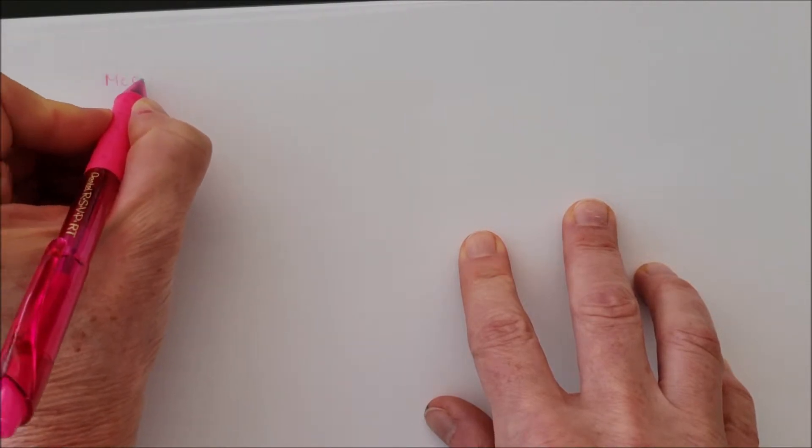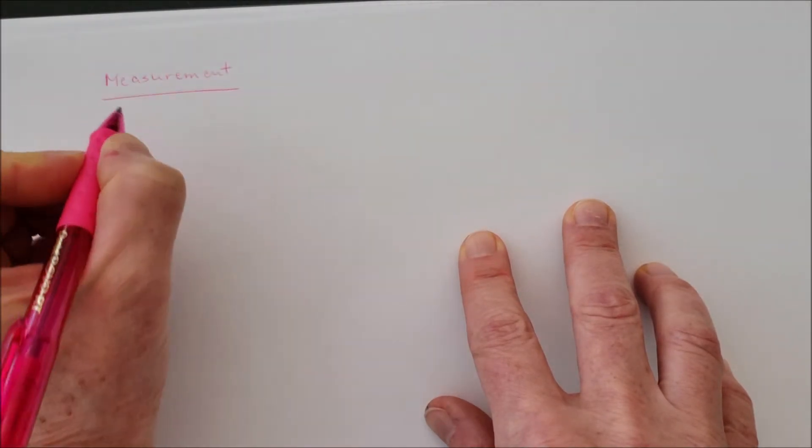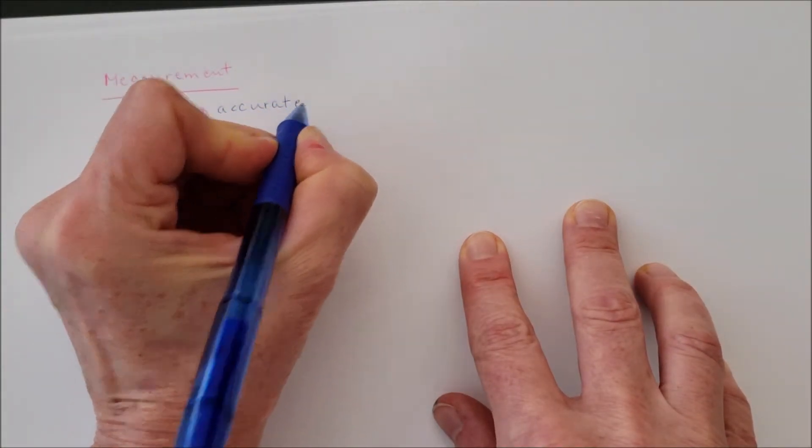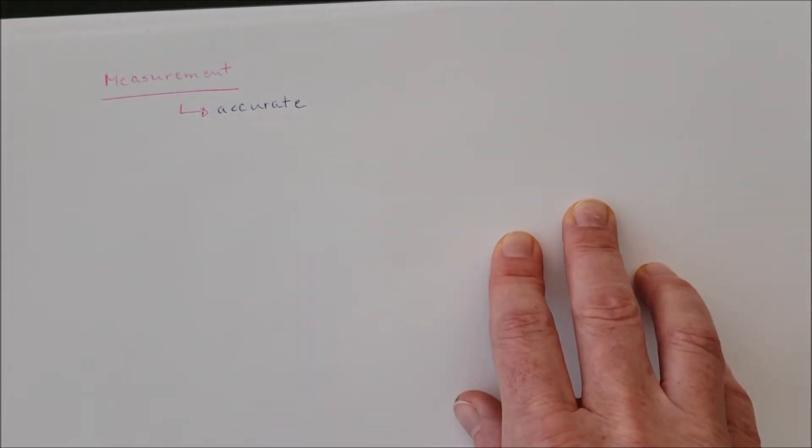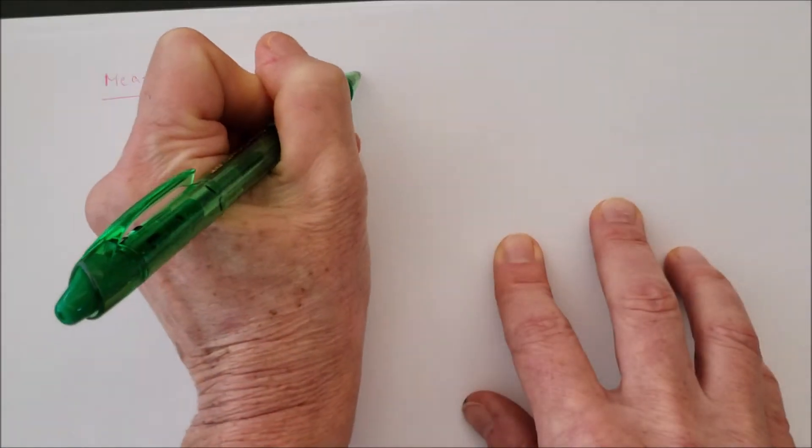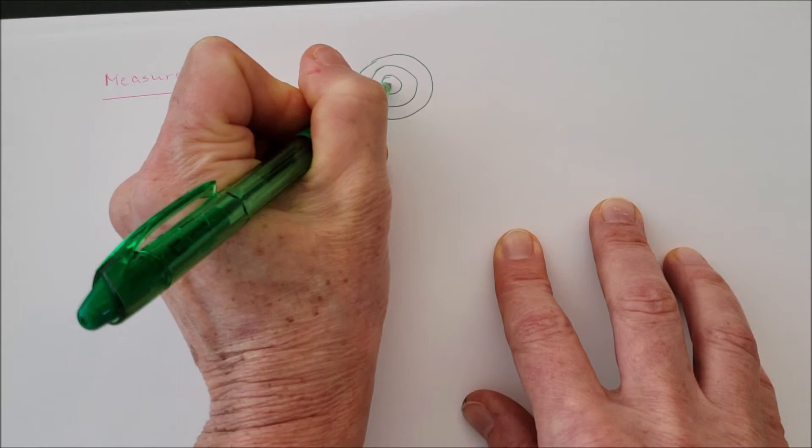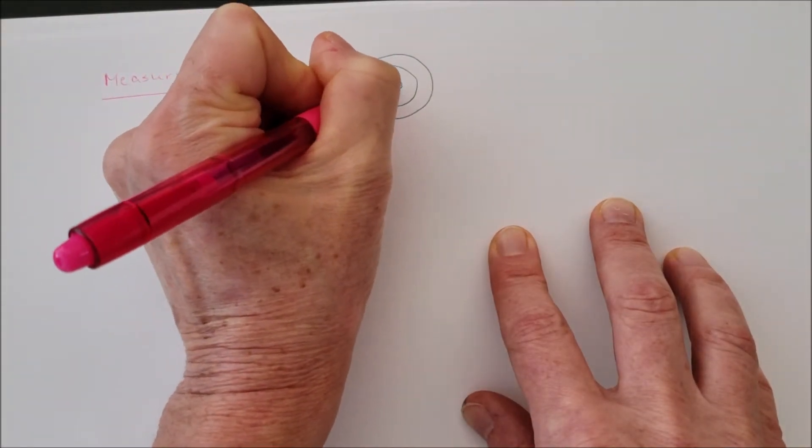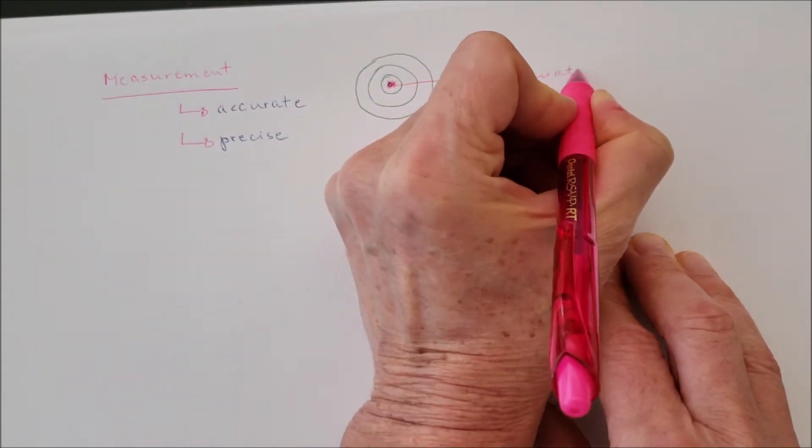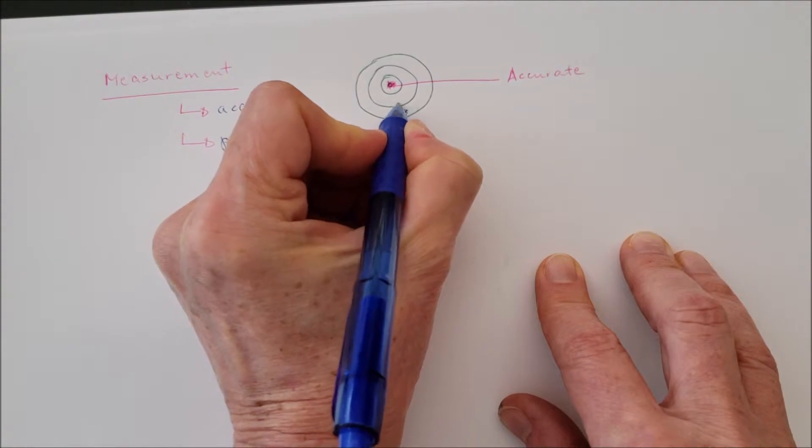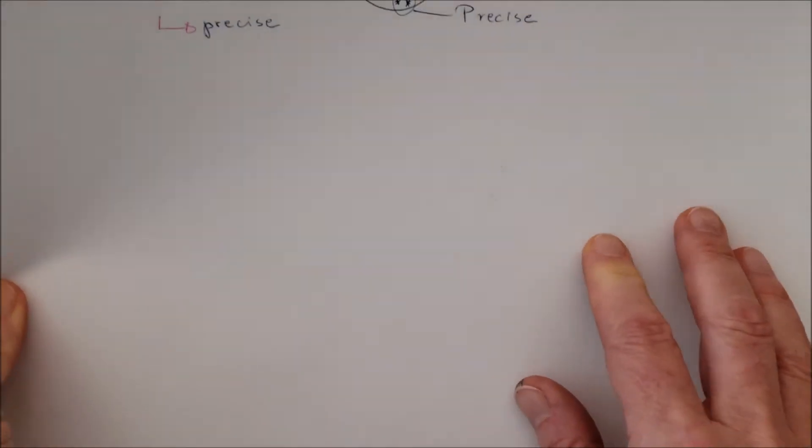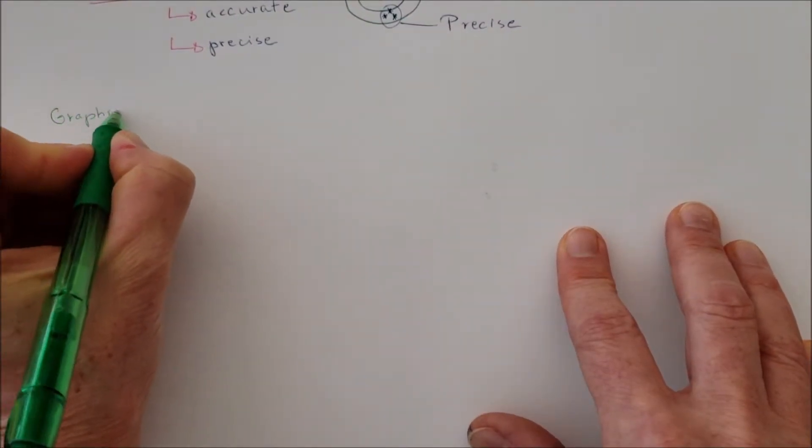So your measurement can be described by accuracy and precision. Accuracy means if I have a bullseye and I will get into the middle, that means that my shots, dart throwings or whatever are accurate. But if I'm outside somewhere, but in a bunch, that means it's precise how close the measurements are together. It not necessarily has to be accurate.